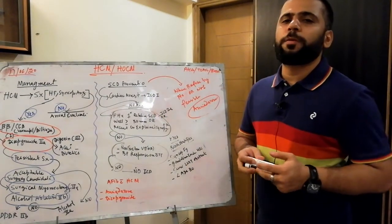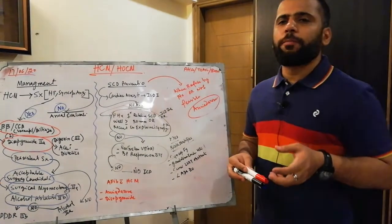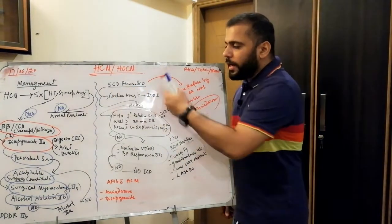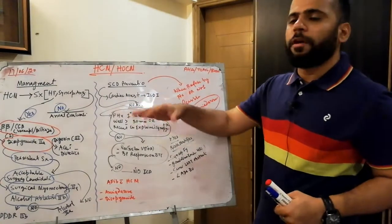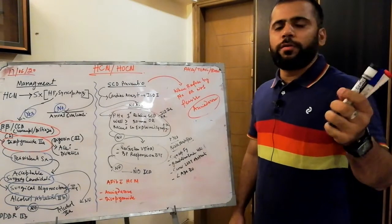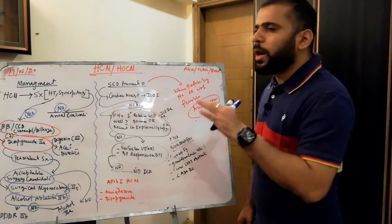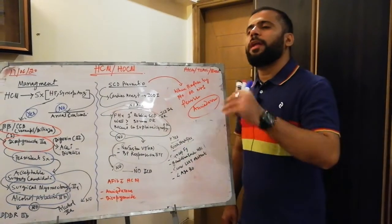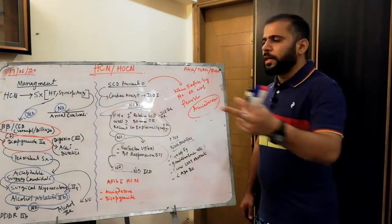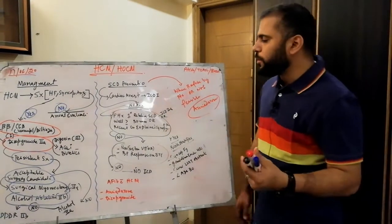The rate of sudden cardiac death in HCM is less than 1% per year, but we must risk stratify patients with the highest risk. In patients who have survived a cardiac arrest — for any reason — ICD is class 1 indication. This applies universally: all survivors of cardiac arrest receive a class 1 ICD indication, including in HCM.